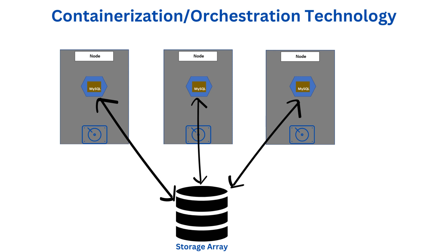Pods are ephemeral in nature, meaning a pod can easily die and when they die they are automatically recreated. Say a pod which resides in node A dies and is automatically recreated in node B — how will the pod connect back to the local storage in node A? But if the pod is independent of the local storage, as soon as the pod comes back up on any node, it can easily connect back to the external storage, making data consistent and persistent. Therefore, to avoid data corruption or data loss, using an external storage is the way to go.